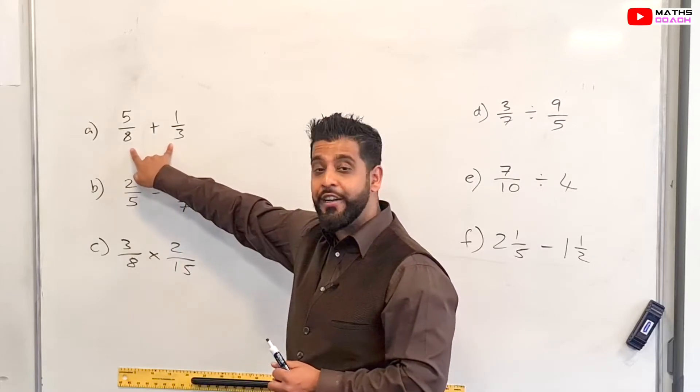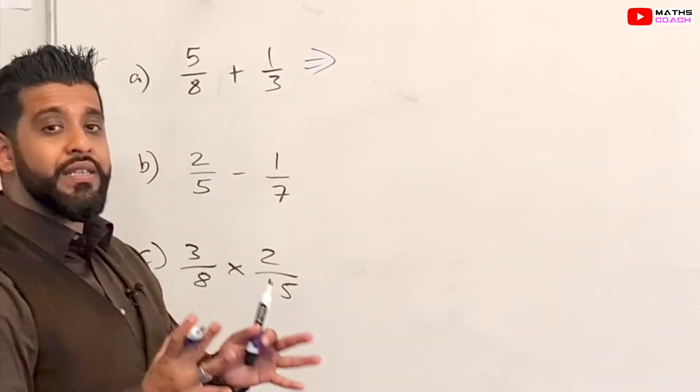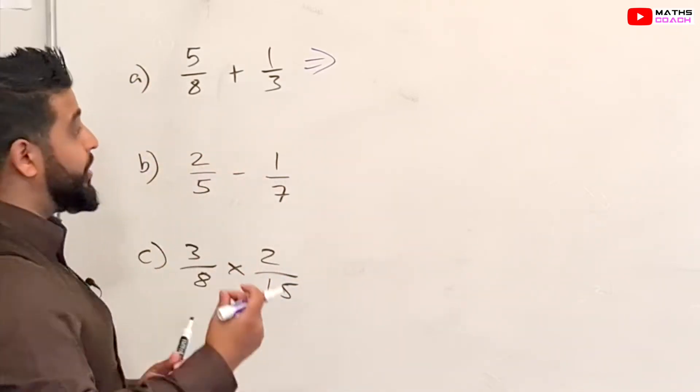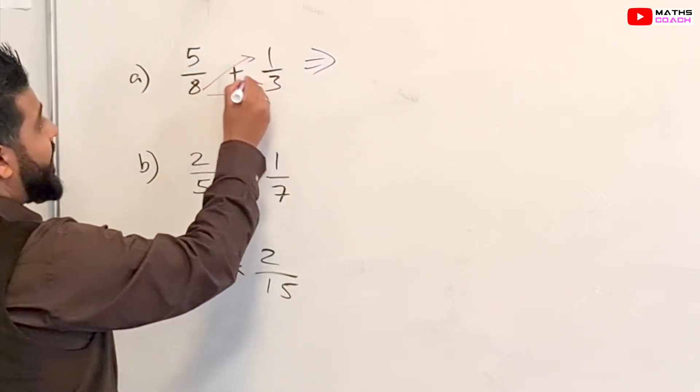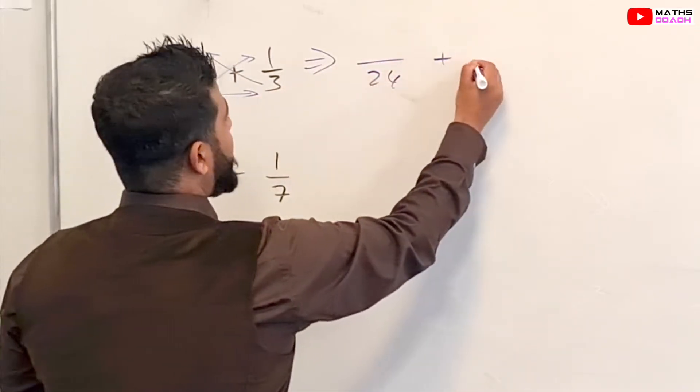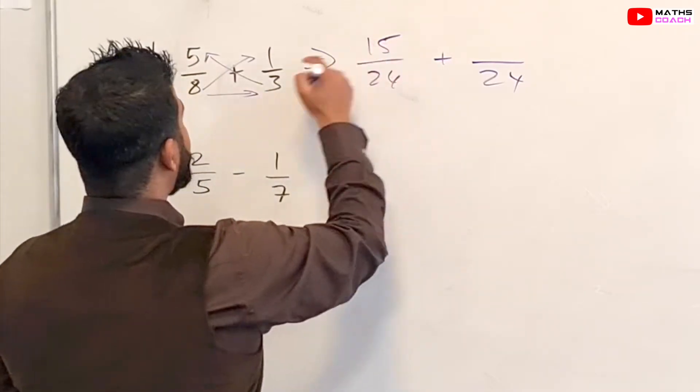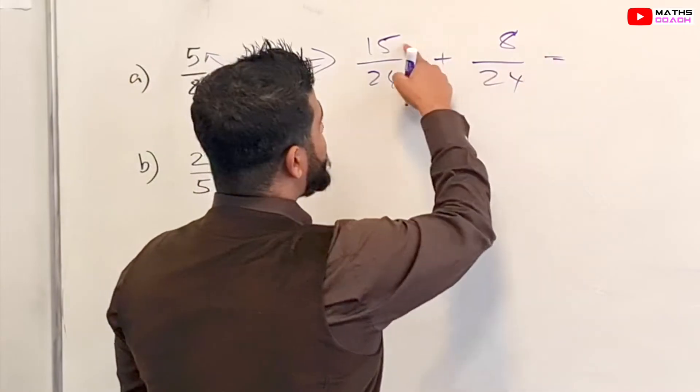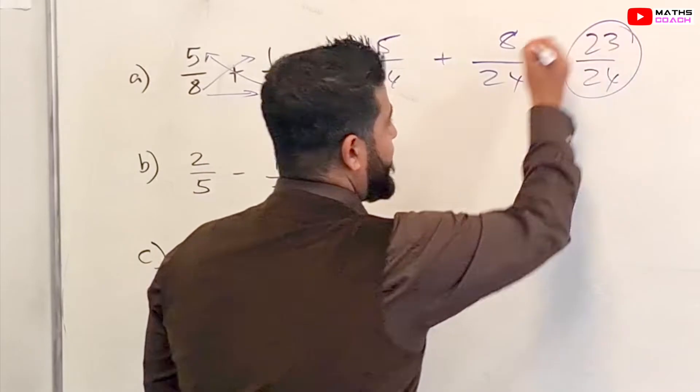Now the denominators are different so we're going to need to make them the same. I do have a separate lesson where I go into this in more detail but for this lesson I'm just going to go over the basics. You multiply this across and then you multiply this with this and this with that. So 8 times 3 is 24 plus another 24 here. 5 times 3 is 15 and 1 times 8 is 8. So now the denominators are the same, just add the top: 15 plus 8 which is 23 over 24.